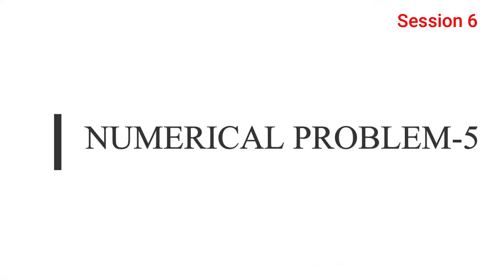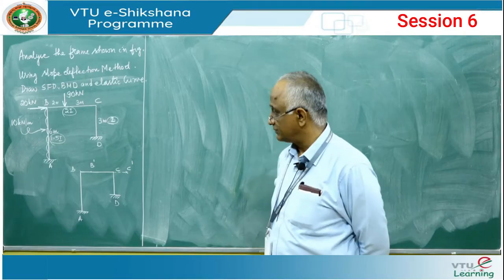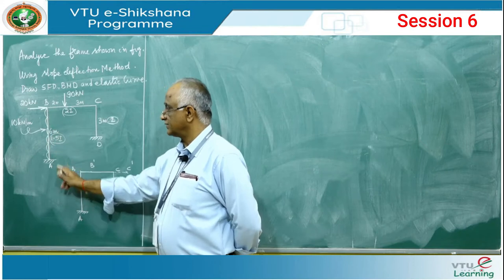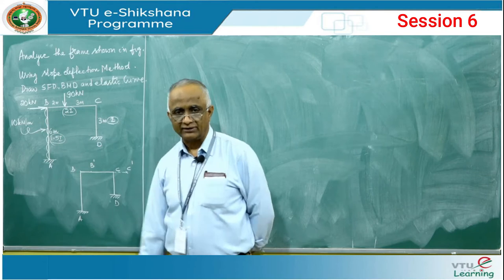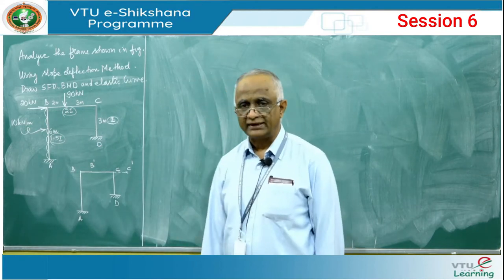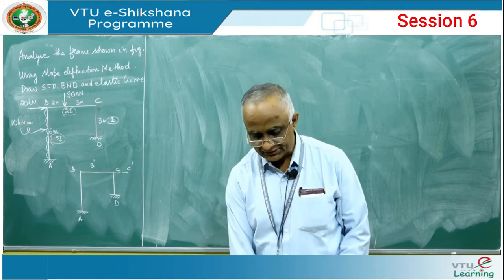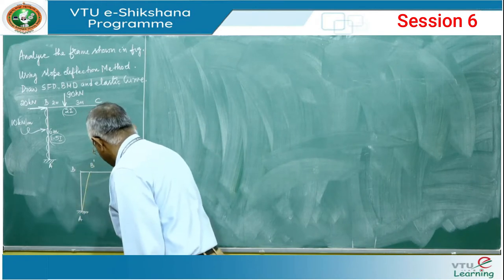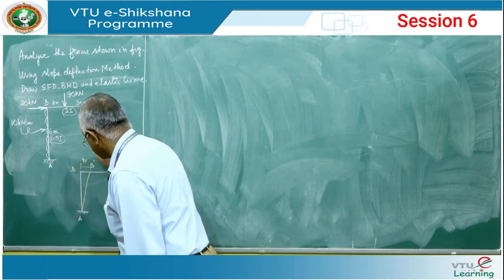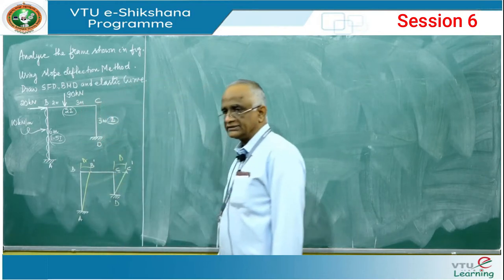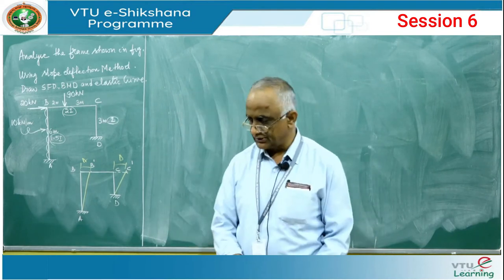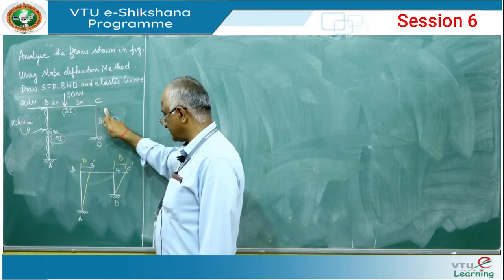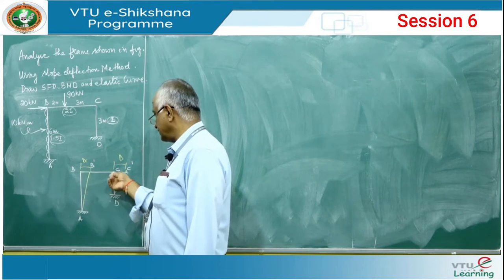This is the final problem of the slope deflection approach, considering all types of loads on a portal frame with variable column heights, a horizontal member, and a horizontal load. Since the load acts from left to right, we assume sway occurs towards the right, represented by delta, which is unknown. In addition to slopes theta_b and theta_c, delta becomes a third unknown, since theta_a and theta_d are zero at the fixed ends A and D.